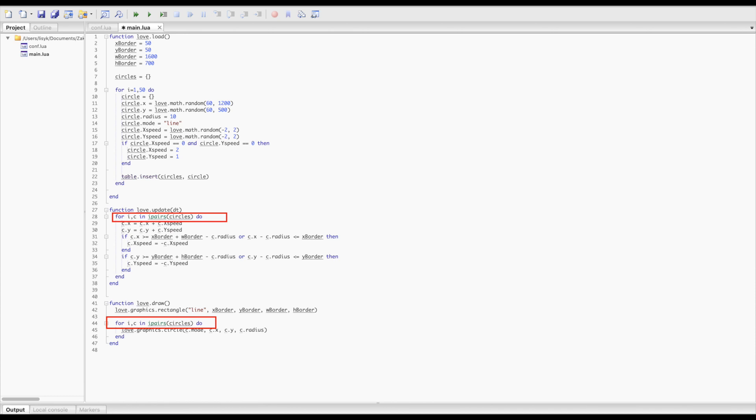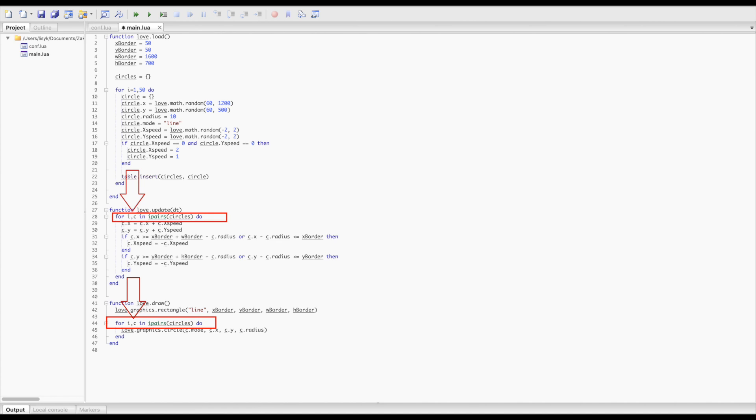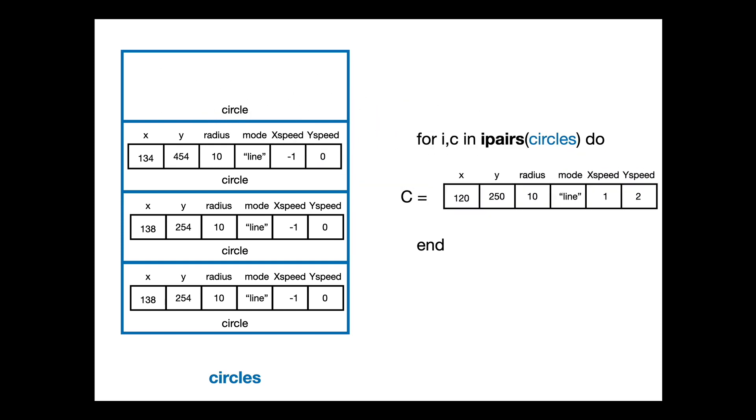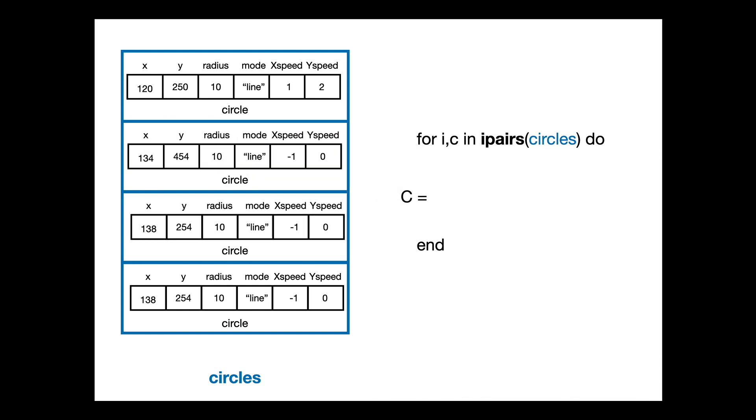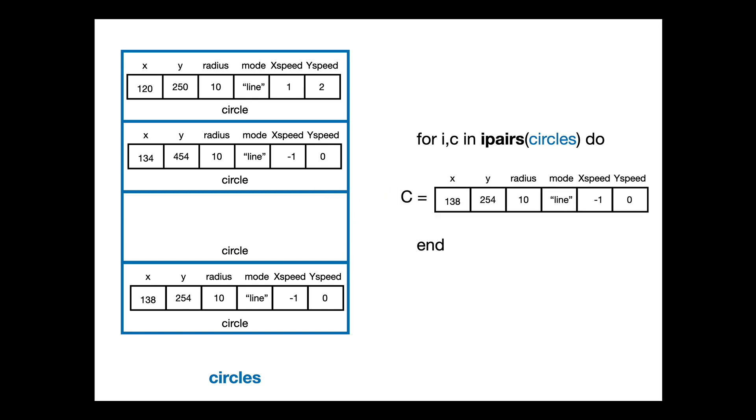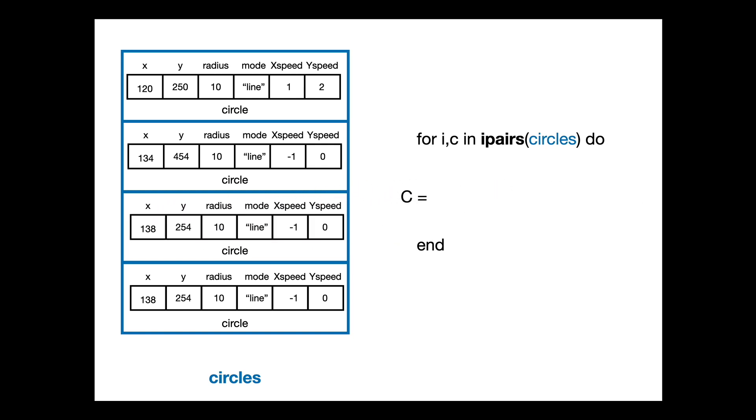And here we are iterating through it with our loop. Here we have special words, ipairs, and where to apply this. What does I and C letters mean? I is the number of our loop iteration, like 1, 2, 3. And the C is assigned every time with every new iteration to our object. So when we iterate the first time, our C will be in the circle object. Next time, it will be this one and so on and on while we have any values in our list.